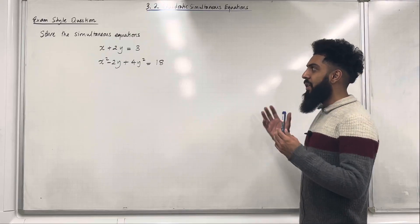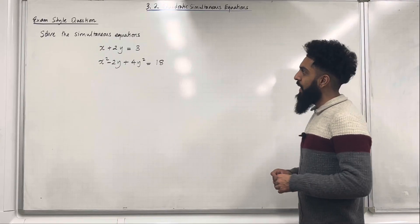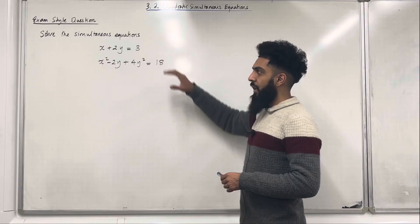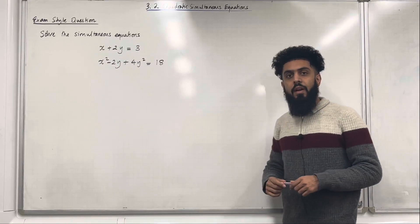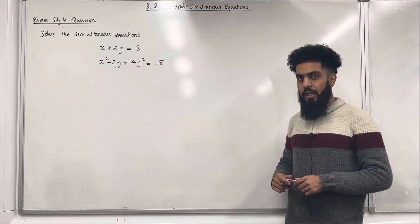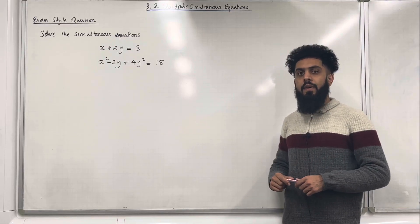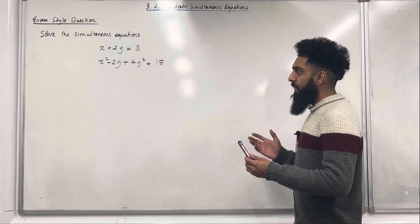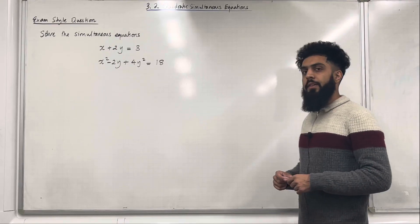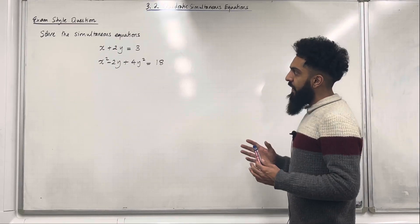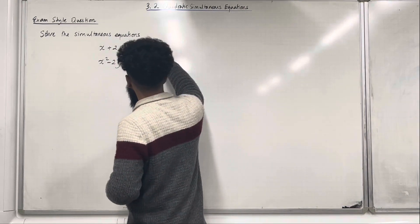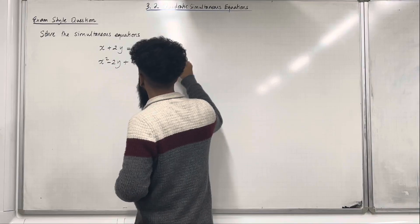Over here I've got a beautiful exam-style question: solve the simultaneous equations given. Now in my video 3.1 I covered two different techniques — the first one is called the process of elimination and the second one is called the process of substitution. To solve these simultaneous equations we need to use the process of substitution. The very first step is to label your equations, so I've got equation 1 and equation 2.